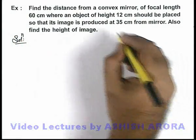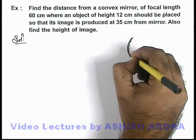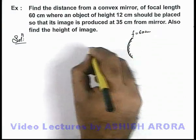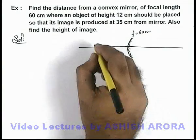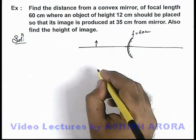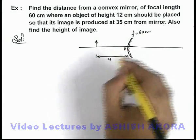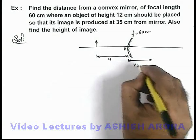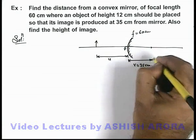In this situation, we are given a convex spherical mirror which has a focal length of 60 centimeters. On its principal axis, we are required to place an object somewhere, say at a distance u from the pole of the mirror, such that its image is produced at a distance v, which is already given as 35 centimeters.